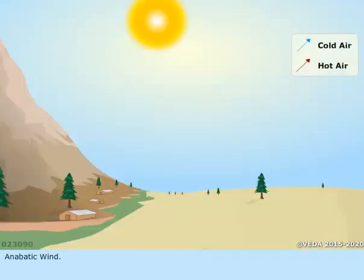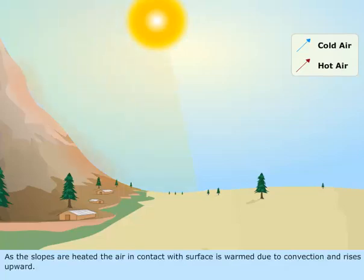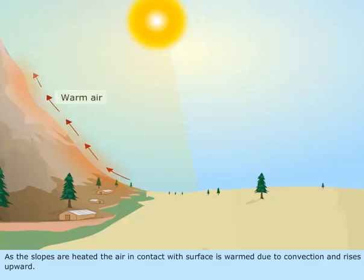Anabatic wind. Anabatic, or upslope winds, occur over mountain slopes on calm sunny days. As the slopes are heated, the air in contact with the surface is warmed due to convection and rises upward.